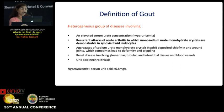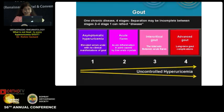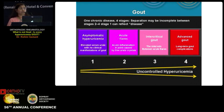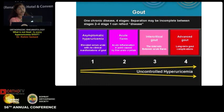Uric acid has been variably defined, but I have used the standard definition of 6.8 milligrams percent. There are four stages through which a person with gout passes — not necessarily always, but as a general rule of thumb: asymptomatic hyperuricemia, then an acute flare of gout, then intercritical gout in which there may not be too many symptoms, and then advanced gout with complications.